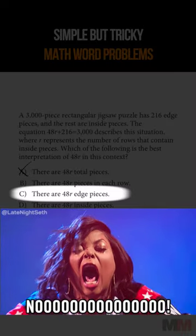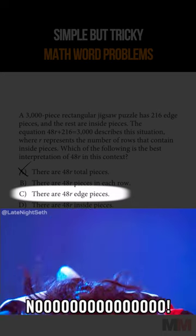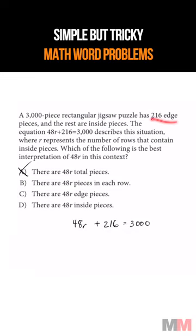Another one that's wrong is C. There are 48R edge pieces, but this says that there are 216 edge pieces.